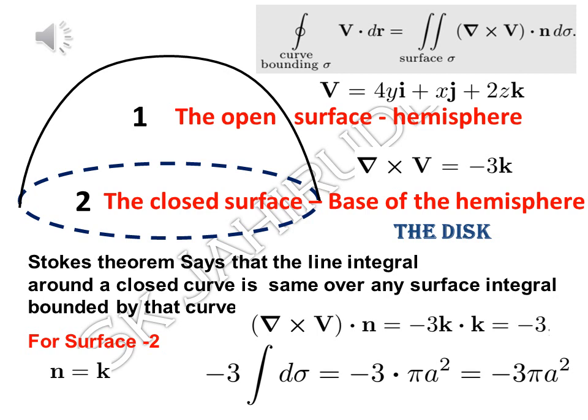Calculating the surface integral over the disk is very easy. The disk is in the xy-plane, so n̂ = k̂. We can already calculate curl V — it equals −3k̂. So curl V · n̂ = −3, and the surface area of the disk is simply πa². The surface integral is just −3 × πa² = −3πa².